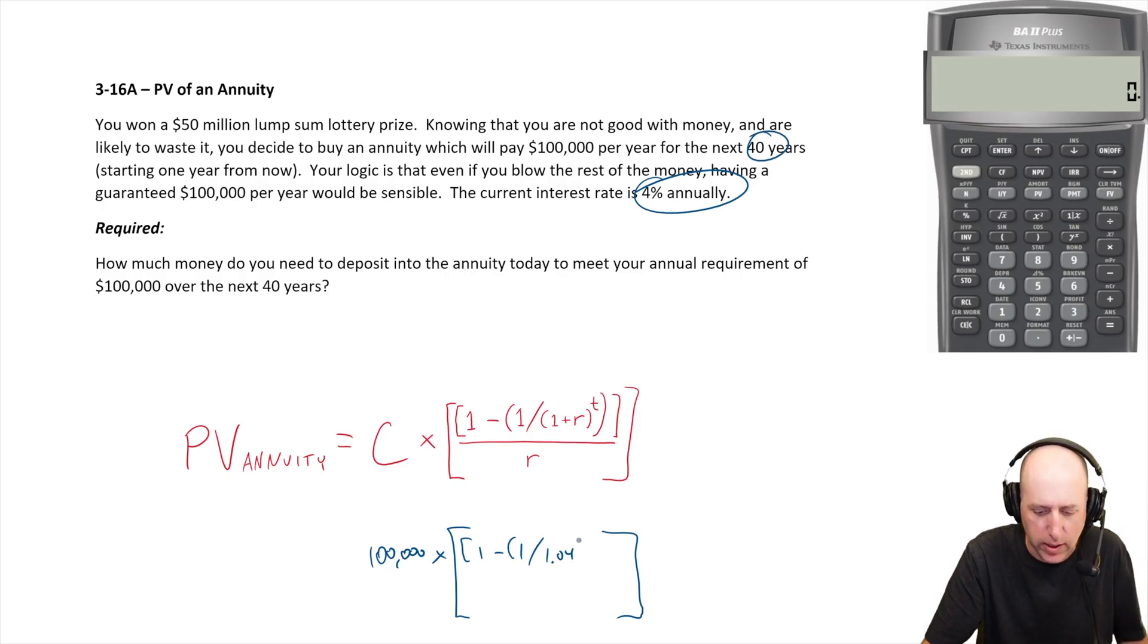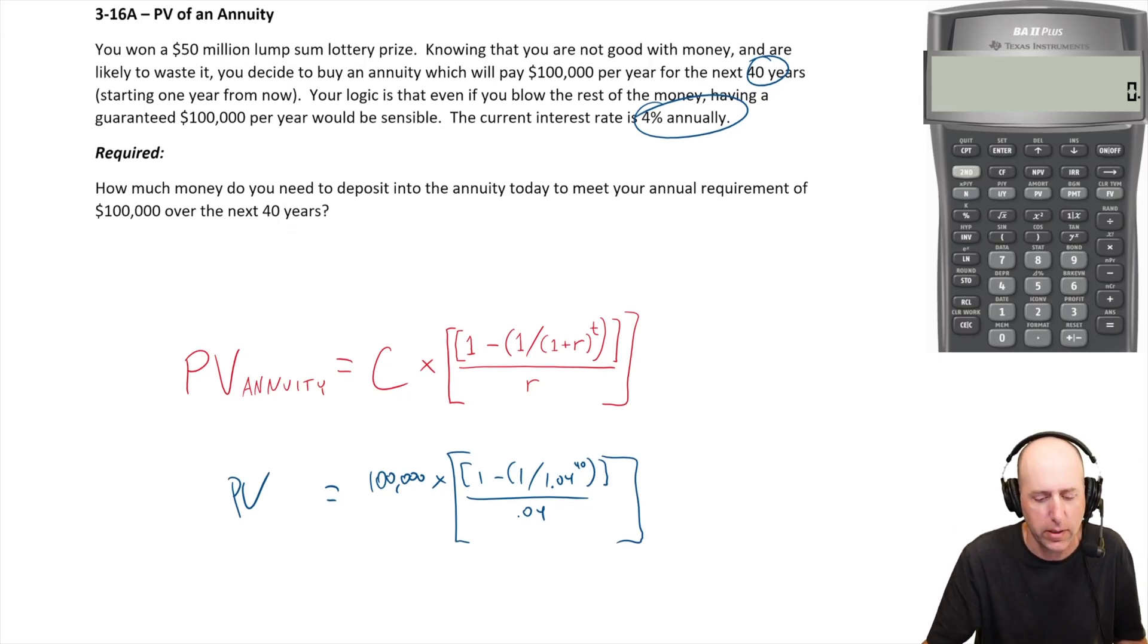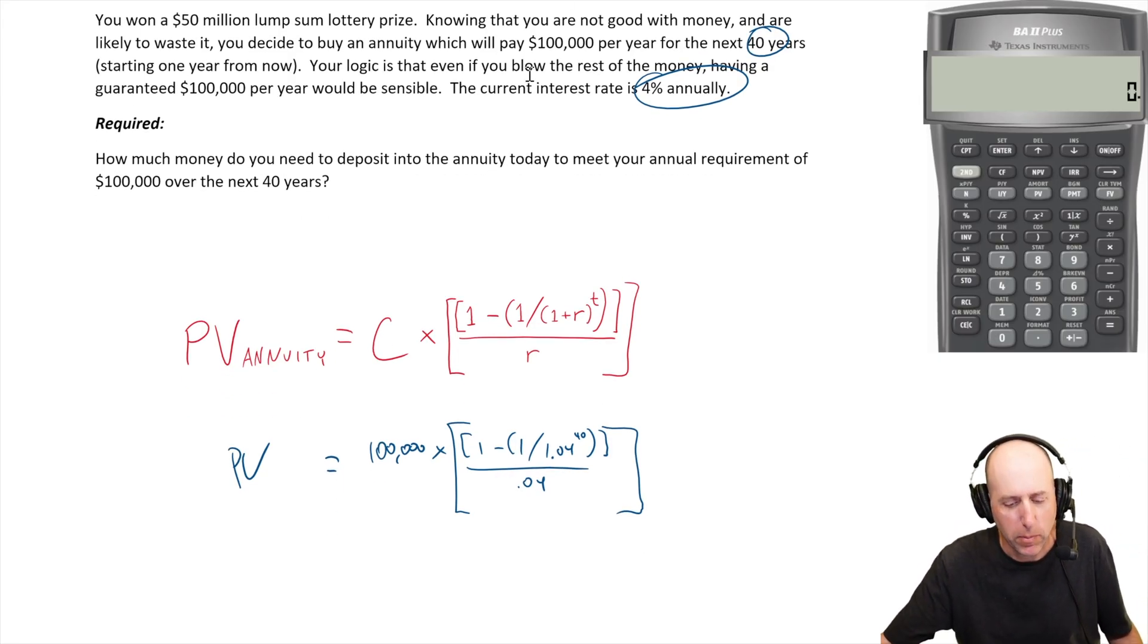So 1.04 to the power of T, how many years? 40 years. So 1.04 to the 40th power, all divided by the rate of interest or required rate of return. That's what we're calculating. PV equals 100,000 times that big messy bracket.